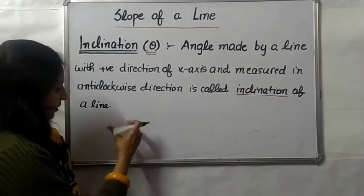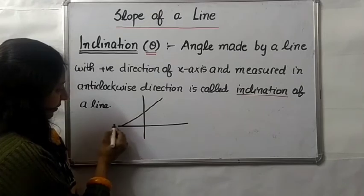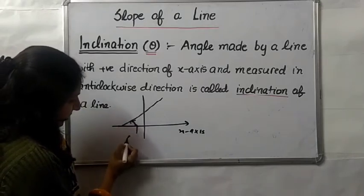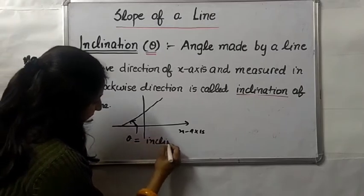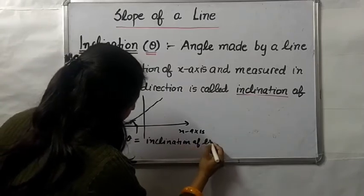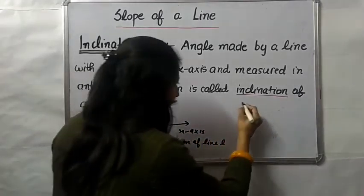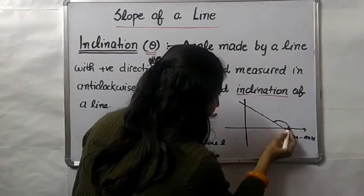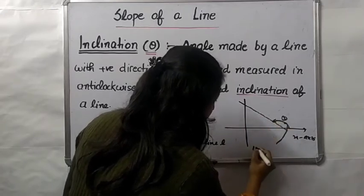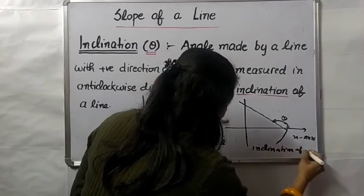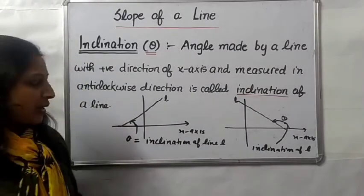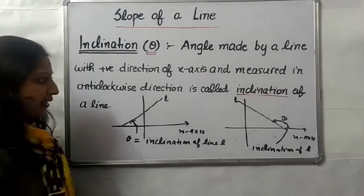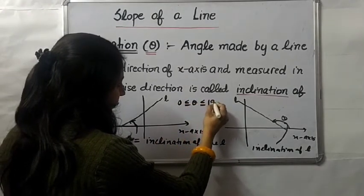Suppose we have a line like this. This is the positive x-axis. The angle theta measured in the anti-clockwise direction is called the inclination of line n. The minimum value of theta is 0 and maximum value is 180 degrees, so 0 ≤ θ ≤ 180°.